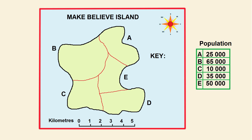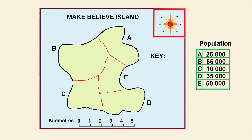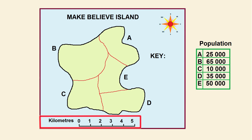This map has all the normal mapping conventions such as a frame, title, north point, and a scale bar, as well as all the different regions which I have labeled region A, region B, region C, region D, and region E.